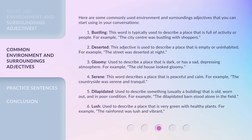Here are some commonly used environment and surroundings adjectives that you can start using in your conversations. Bustling: this word is typically used to describe a place that is full of activity or people. For example, the city center was bustling with shoppers. Deserted: this adjective is used to describe a place that is empty or uninhabited. For example, the street was deserted at night.